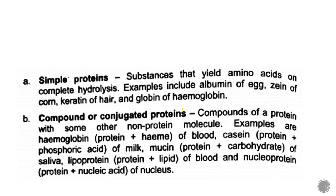Simple proteins are proteins that yield only amino acids on complete hydrolysis — whether by acid, enzyme, or any other method. When broken down, only amino acids are obtained. An example is egg albumin. Albumin is a very important protein; albumin levels in our body must be maintained, and if they are not, it indicates a disease state.